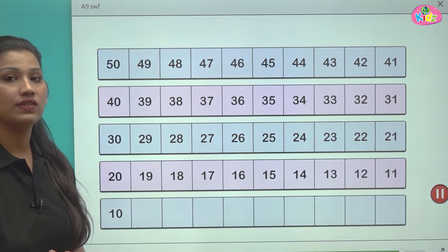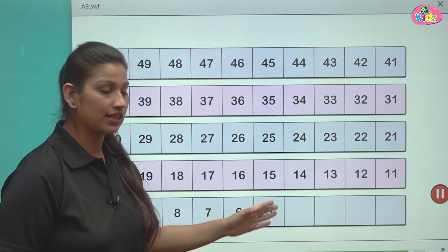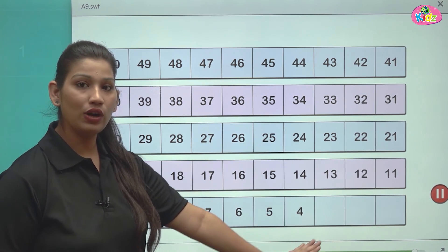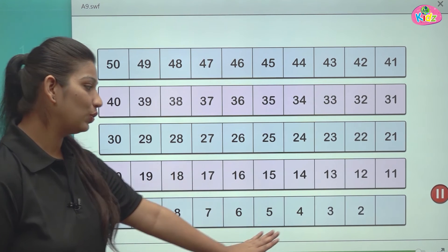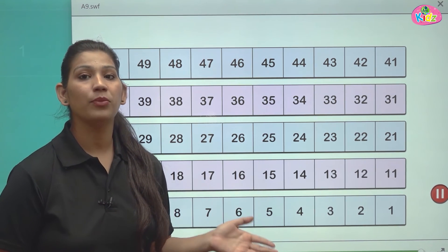The last we have 10, 9, 8, 7, 6, 5, 4, 3, 2 and number 1. This is till number 1.